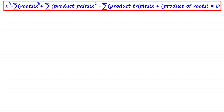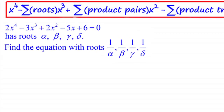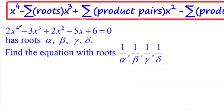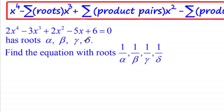Now what I want to do here is follow it up with an example. We've got 2x to the power 4 minus 3x cubed plus 2x squared minus 5x plus 6 equals zero, and we're told it has roots alpha, beta, gamma and delta. We've got to find the quartic equation with roots 1 over alpha, 1 over beta, 1 over gamma, and 1 over delta — in other words, the reciprocals of these roots.